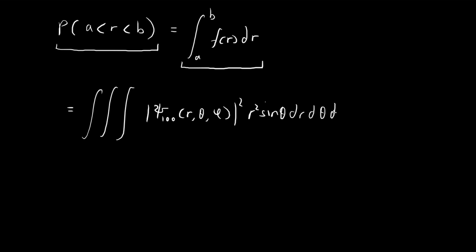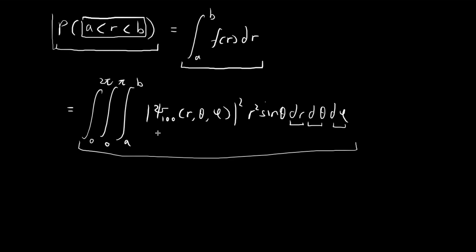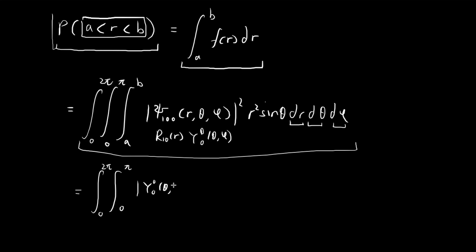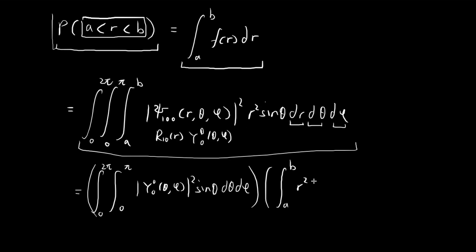We would integrate it throughout the region where this condition is satisfied — that is, where r ranges from a to b. For the angular components, we integrate θ from 0 to π and φ from 0 to 2π. Don't forget, we can actually break up the wave function ψ into two parts: the radial component and the angular component. And we can break up the integral into two parts — the integral for the angular component (sine θ dθ dφ) as well as the radial component (r² |R₁₀(r)|² dr).